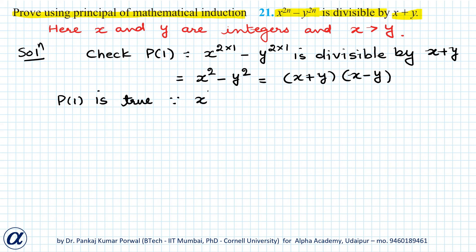So P(1) is true because x squared minus y squared is divisible by x plus y.